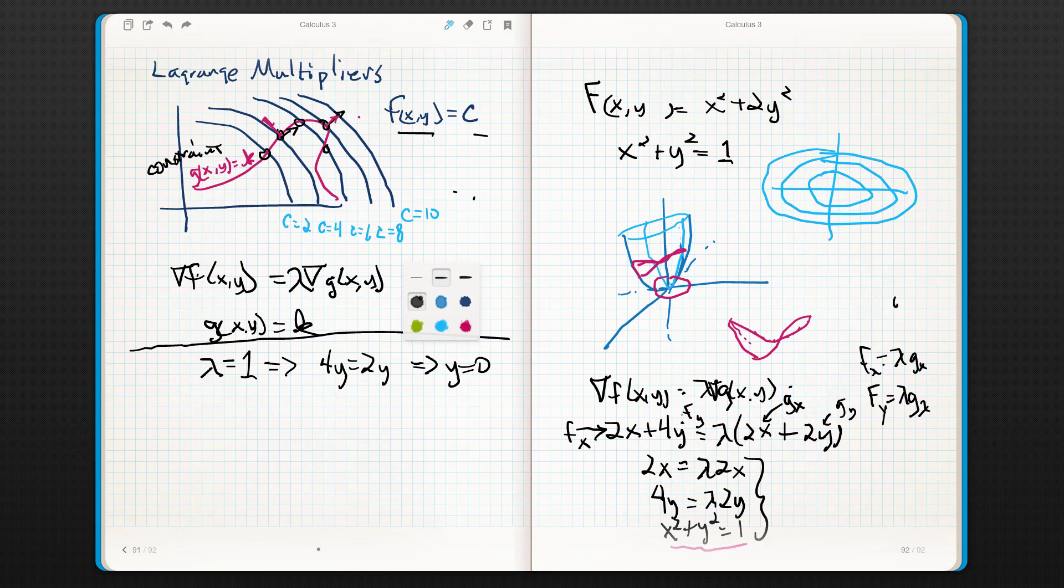So I know that if lambda is equal to 1, then y has got to be equal to 0, which implies that x is going to equal plus or minus 1, right? So I have these two points. I have critical points right off the bat, and I don't have to deal with those discriminants. I don't have to deal with partials. At 1, 0, and negative 1, 0. Sweet.